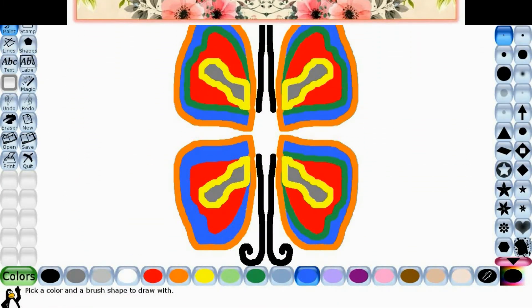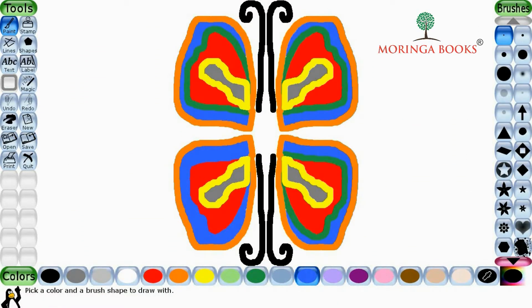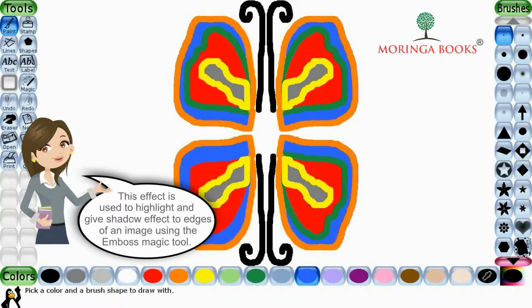Hello students, in this video we will learn the emboss effect. This effect is used to highlight and give a shadow effect to the edges of an image using the emboss magic effect.